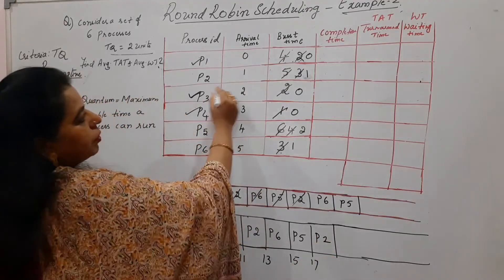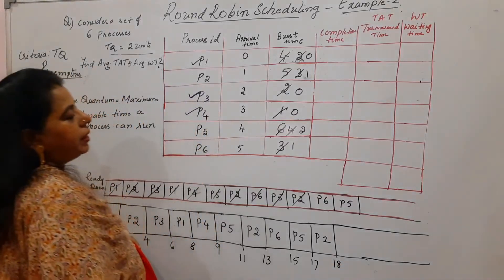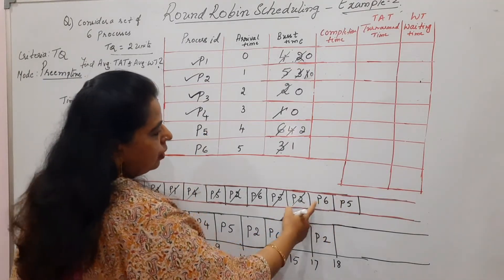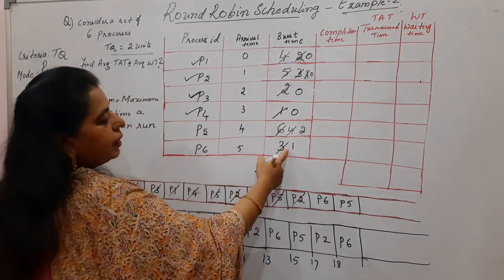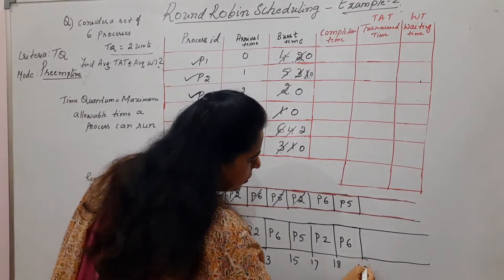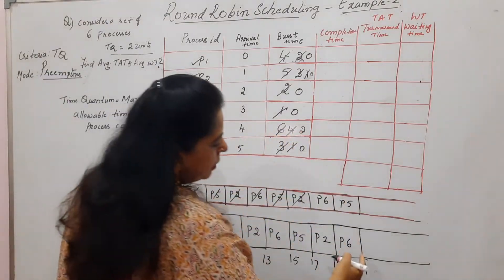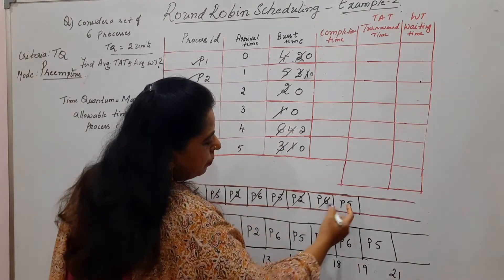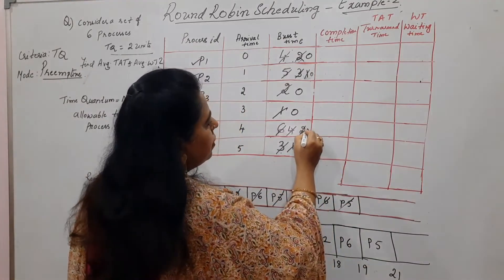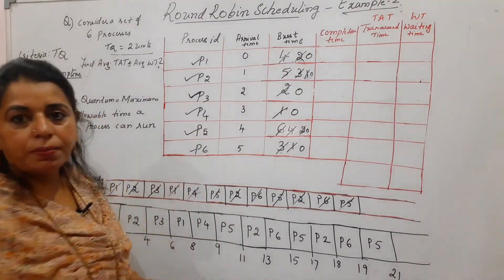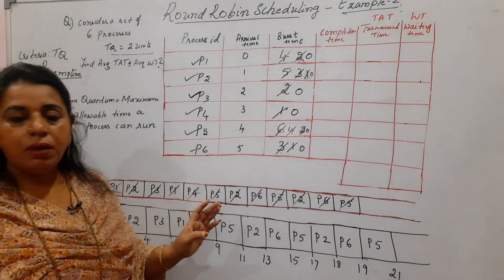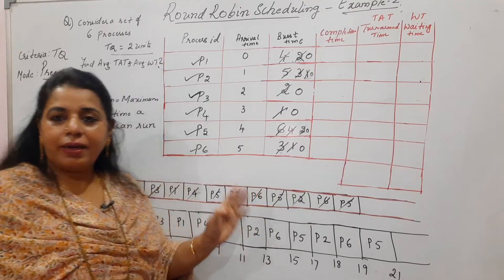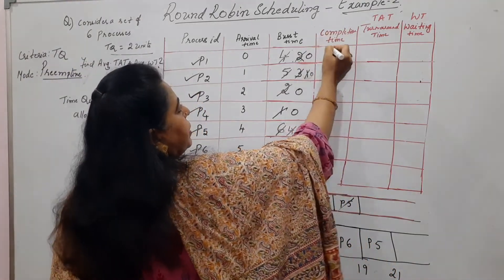P5 runs again for two units with a remaining burst time of two, so it returns once more. P2 then runs its final one unit and completes at time unit eighteen. Now only P5 and P6 remain. P6 runs its last one unit and completes at nineteen. P5 runs its final two units and completes at twenty-one. The ready queue and running queue approach helps track all pending processes throughout.